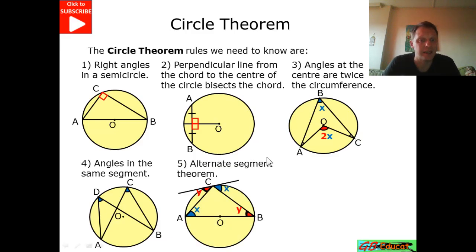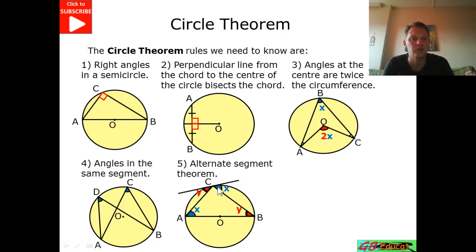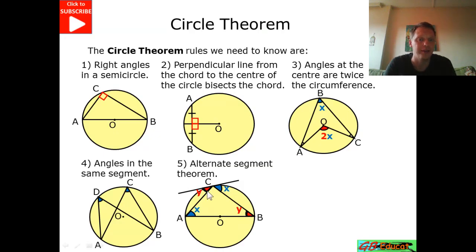We've got the alternate segment theorem. This says that if we've got a tangent meeting a triangle formed within a circle, we can safely assume that angle Y here is going to be the same as angle Y there. Angle X is going to be the same as angle X there, because it's going to form 180 degrees where this angle is common to both.